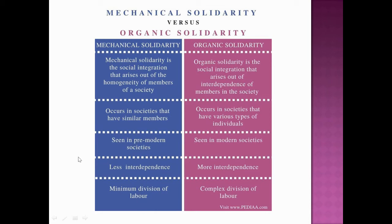This is basically the difference between the two types of solidarity. The basis of solidarity in mechanical solidarity is resemblance and similarity. In organic solidarity, the basis is difference — because people are different from each other, they depend on one another. In mechanical solidarity, because people are alike and homogeneous, that is the basis of solidarity.